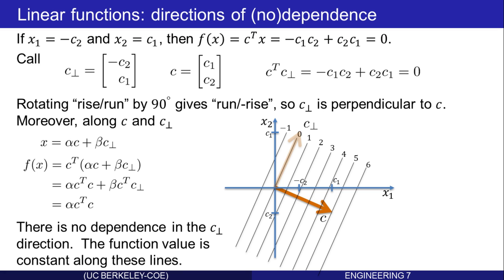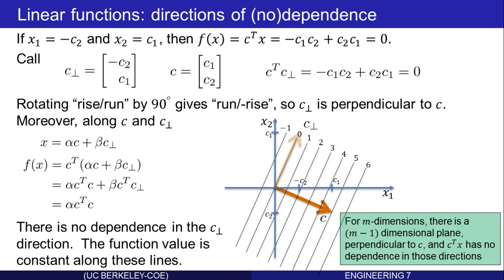So f varies very simply in the direction of c and has no dependence in the direction of c perp. That's the common structure of linear functions. In higher dimensions, it's not just one direction where there's no dependence, but there's actually m-1 directions where there's no dependence. In m dimensions, there's an m-1 dimensional plane, which is perpendicular to c, and the function c transpose x has no dependence in those directions of the plane. Here, the plane was simply a one-dimensional plane. It was the plane given by c perp.